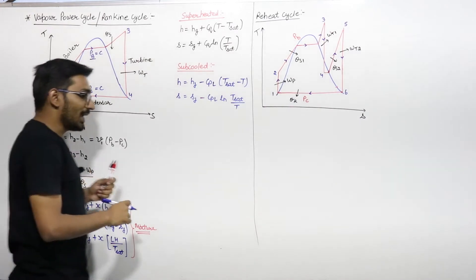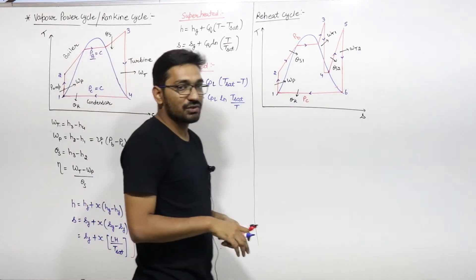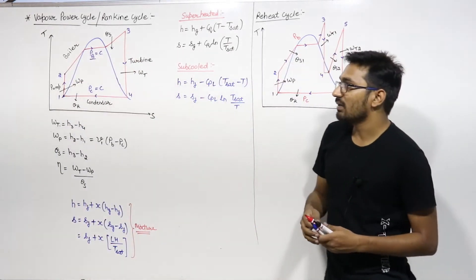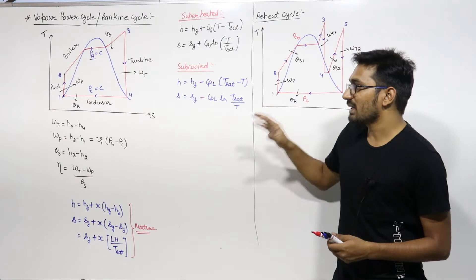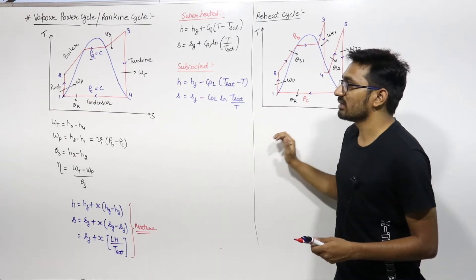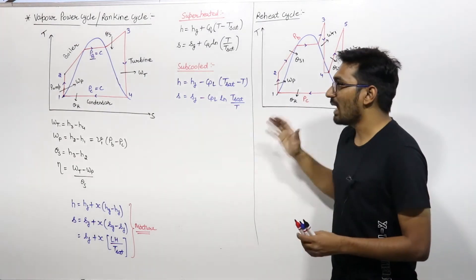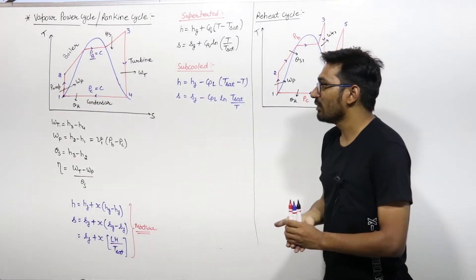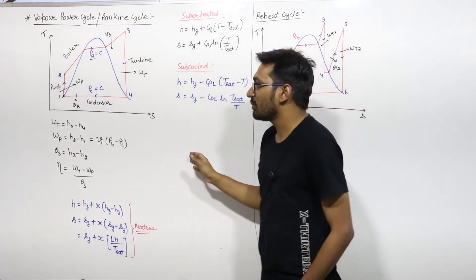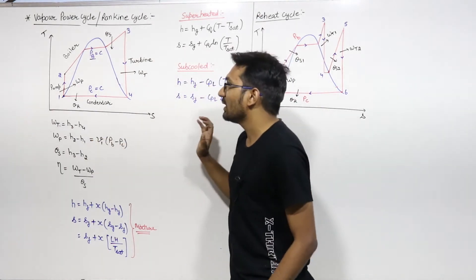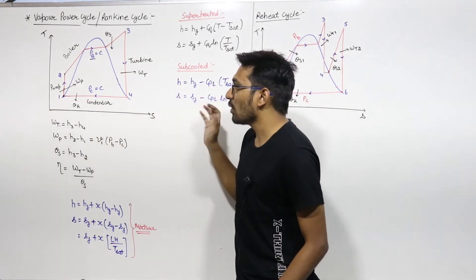Now H1, H2, H3 — all these values will be calculated based on the steam table. The steam table will be given in the paper, and you will get the corresponding enthalpy values from it.